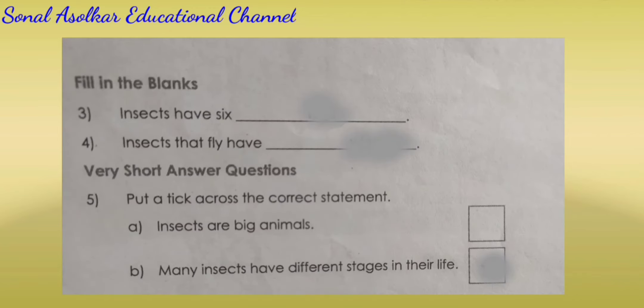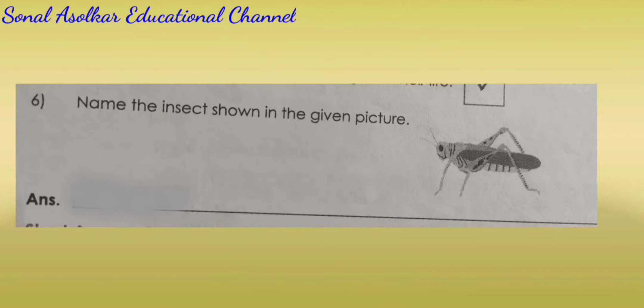Fill in the blanks. Insects have 6 legs. Insects that fly have wings. Very short answer questions. Put a tick across the correct statement. A. Insects are big animals. B. Many insects have different stages in their life. The second option is correct, so we have to tick on the second option.